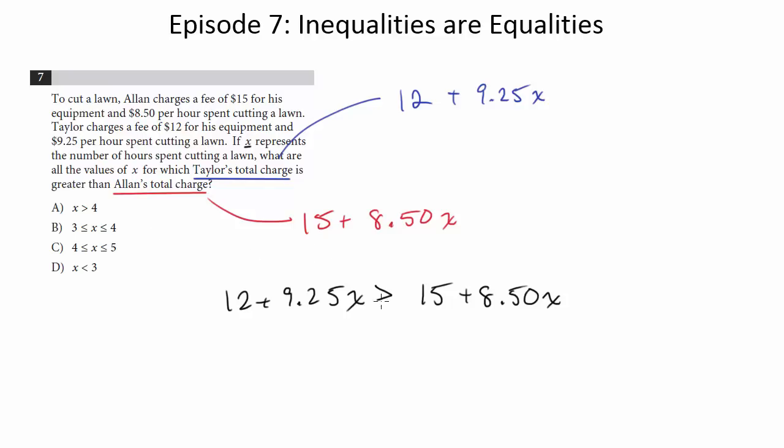Notice right away, since we've got a greater than sign and not a greater than or equal to sign, we can get rid of B and C because those are less than and greater than and equal to signs and we don't want that. We don't want the equal sign. So it's either going to be A or D based on that. So what we do now, like I said, you just solve it like you would an equation.